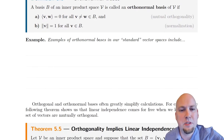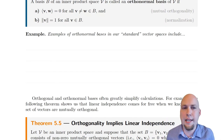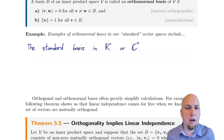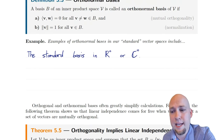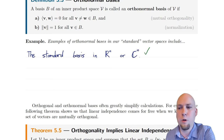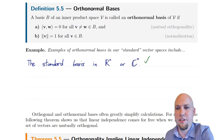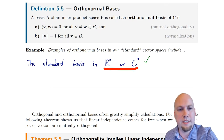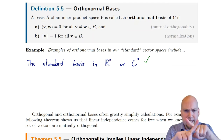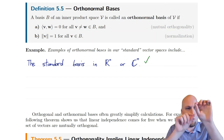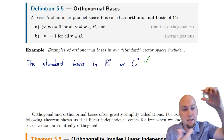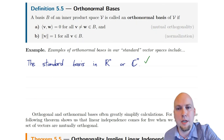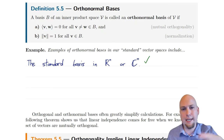We have all sorts of standard examples of orthonormal bases in vector spaces we've been looking at throughout this course. For example, the standard basis in R^n or C^n — it's a straightforward calculation to show that those really are orthonormal bases. You have to check two things: the inner product condition and the length condition. Working with the standard inner product (just the dot product), the e_j vectors — which have a one in a single entry and zeros everywhere else — when you take the dot product of any two of them you just get a bunch of zeros being added up. So all of their inner products are zero, and similarly they all have length one.